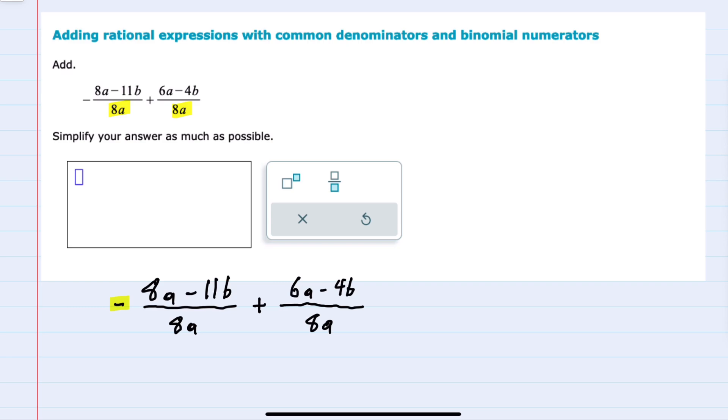For example this minus in front of this rational expression will need to be applied to everything in that numerator. So I'll start by just showing what that would look like. Since we have a common denominator here of 8a,